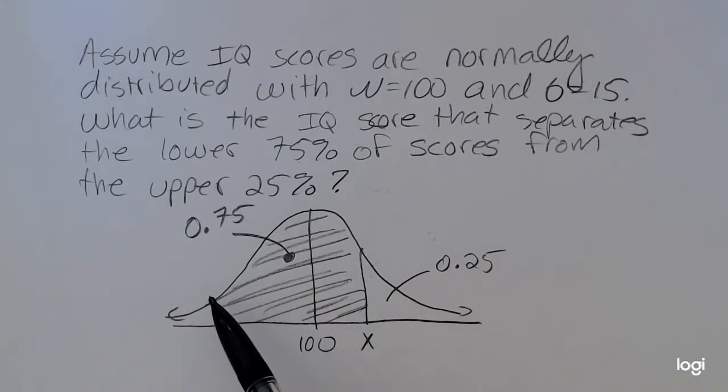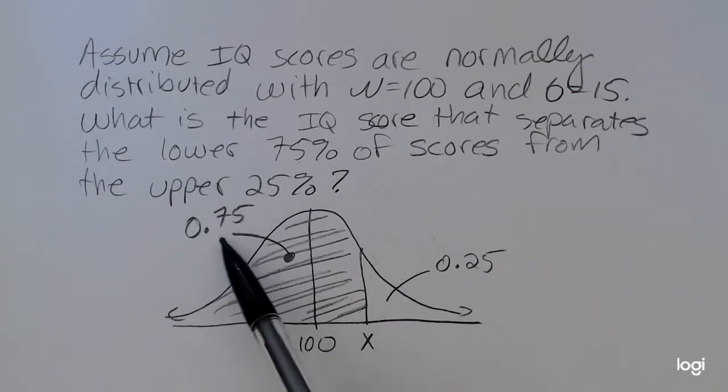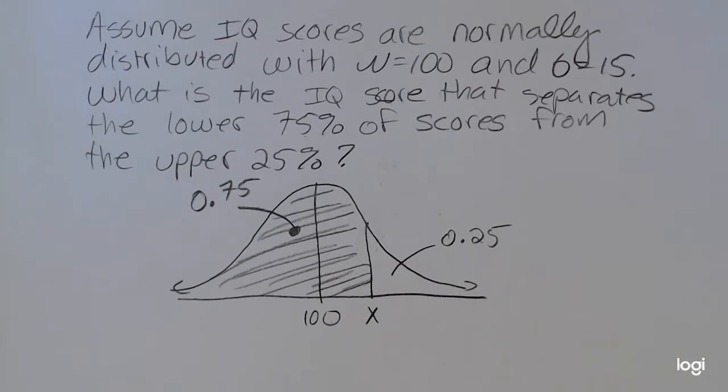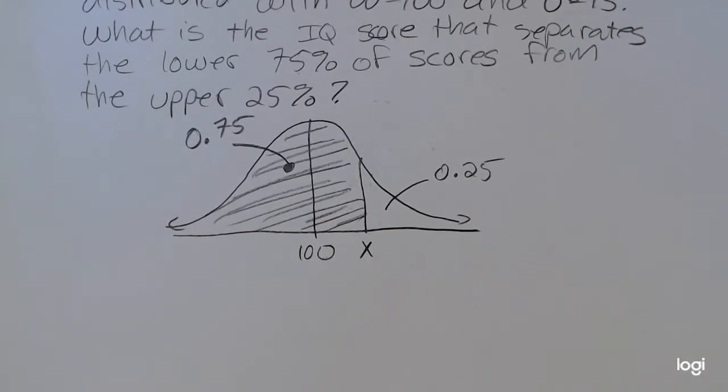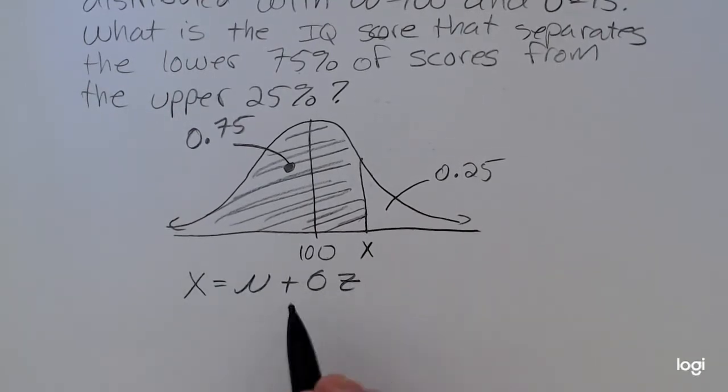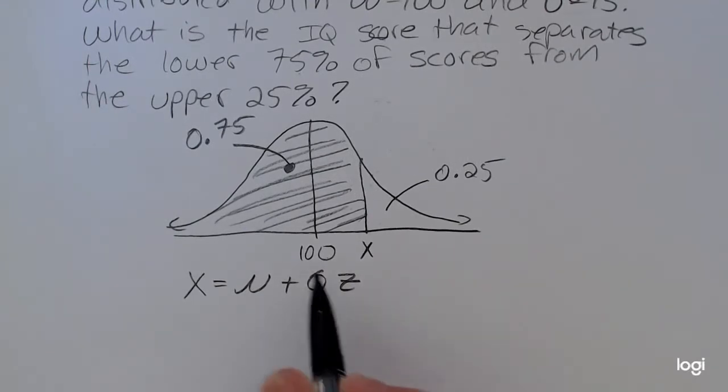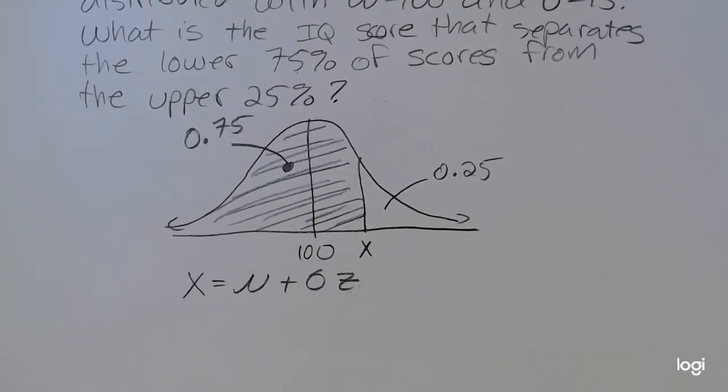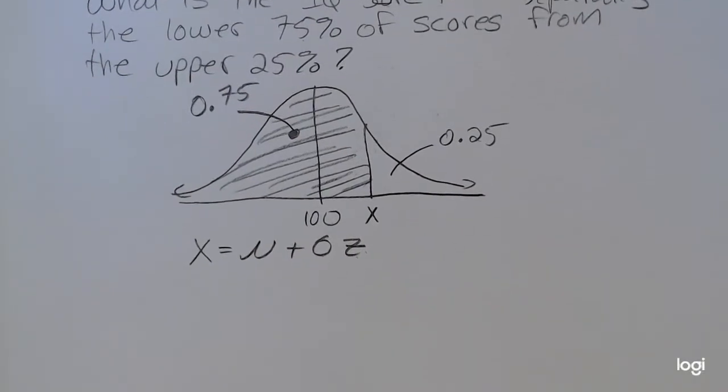Now you could use your standard normal table and work backwards. You'd have to read in the body of the table as close as you can get to 0.75 and read outward to find that z-score. The z-score is not an IQ. So you'd have to unstandardize that z-score using the fact that the x-value is going to be equal to mu plus sigma z. So we're given mu and sigma in the problem. If you found that z-score from the table, you would just plug it in here and then solve for x.